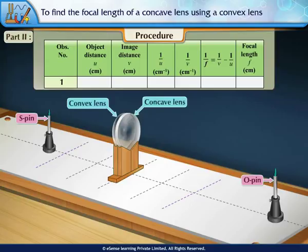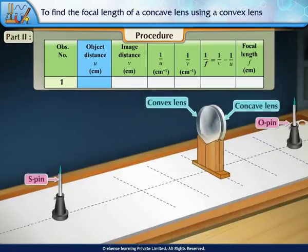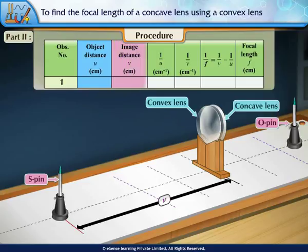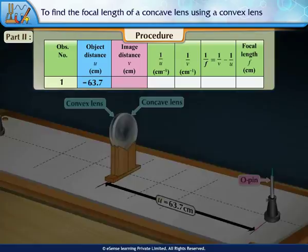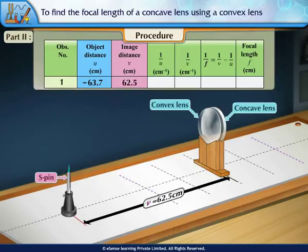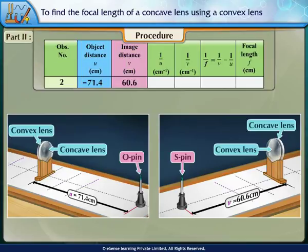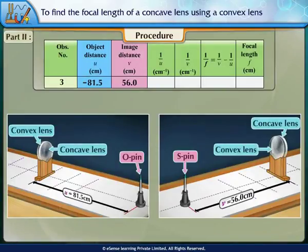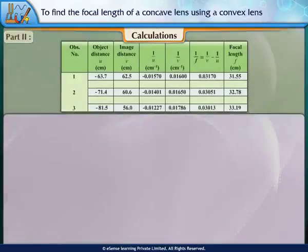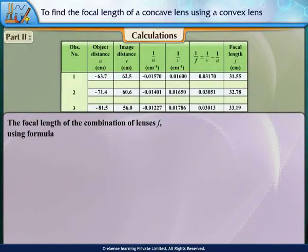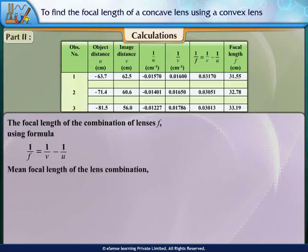Measure the distance of the O-pin from the lens combination as U and that of the S-pin from the lens combination as V. We get our first observation: U = 63.7 cm and V = 62.5 cm. Repeat for two more values of U. Calculate the focal length of the combination of lenses F using the formula 1/F = 1/V − 1/U. Hence, the mean focal length of the lens combination F = 32.3 cm.